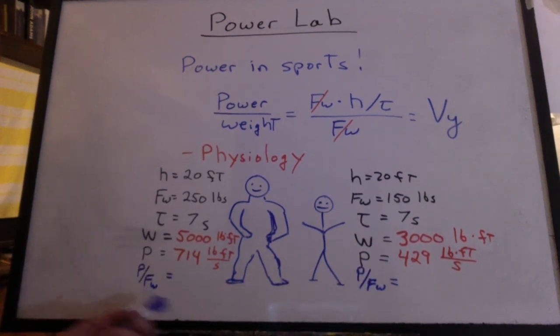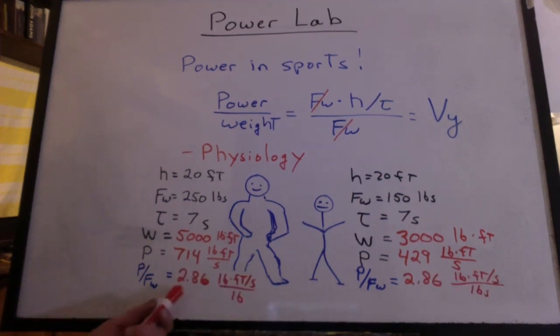But if we compare the power to weight ratios, well, they're the same, 2.86. And you can think of it as pound feet per second per pound or power per pound. This is how much power every pound of your body can produce.